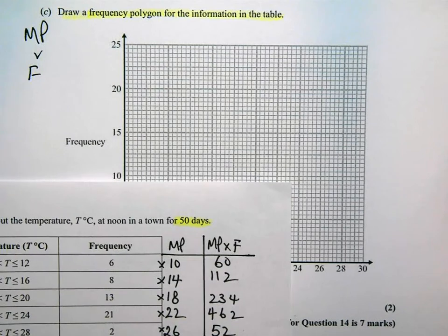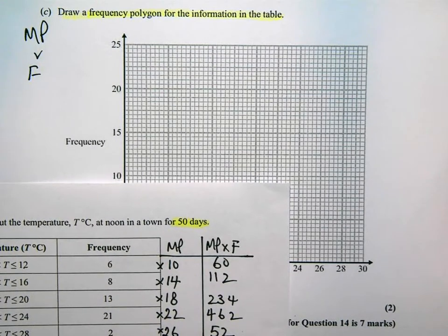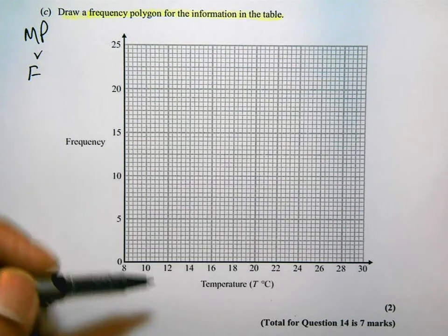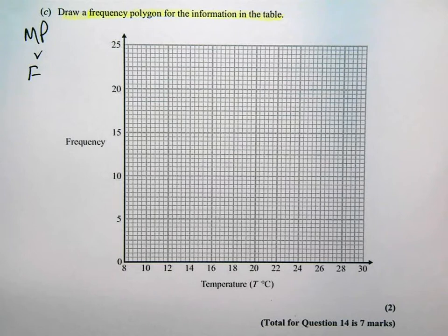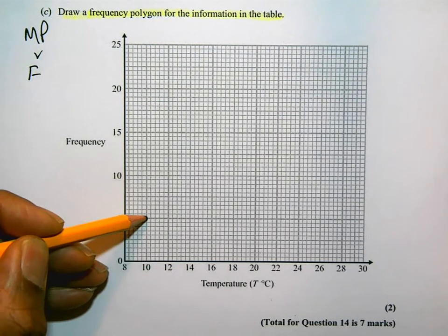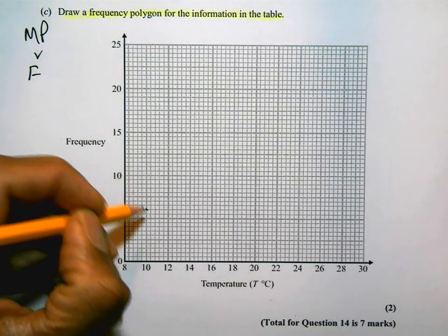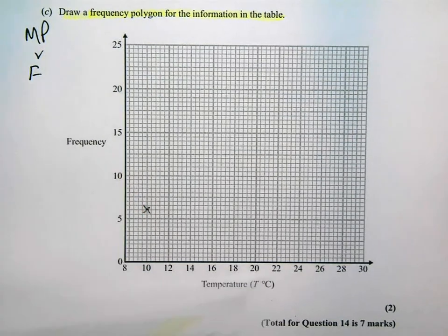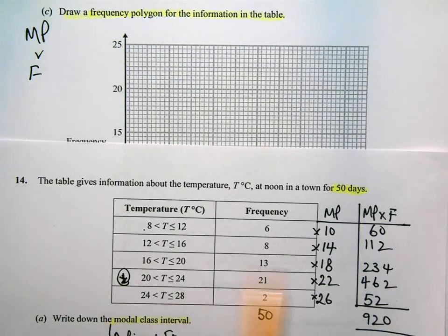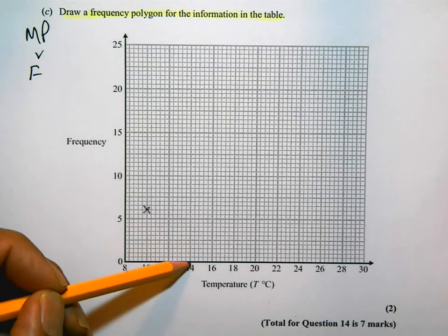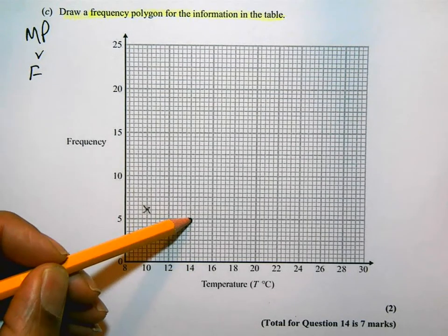So, using a pencil, 10 across, 6 up. That's 5, and then 2 squares up takes me to 6. The next point is 14, 8. So from 14, I'm going to go up to 5, 6, 7, 8 is there.